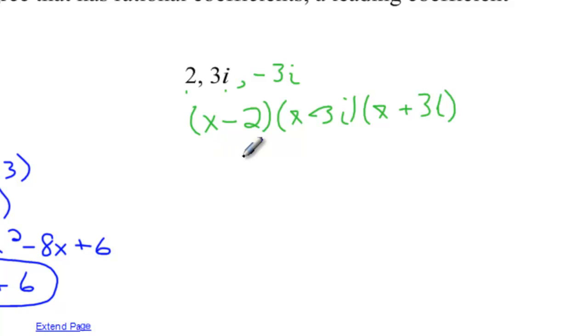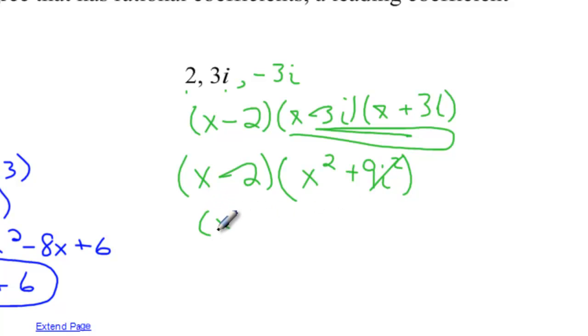So now what happens is I can foil these two, and I'd always foil these two first, simply because when I do that, I'm going to get a binomial, because x minus three i times x plus three i is actually x squared minus nine i squared. If I cancel that i squared and make this plus nine...